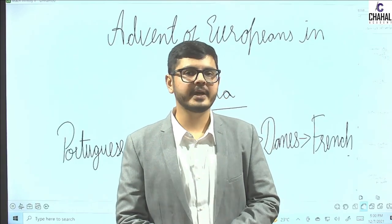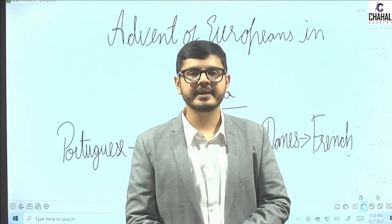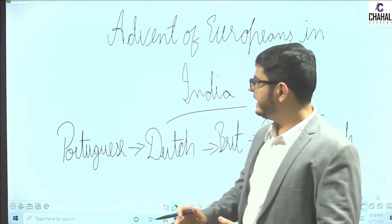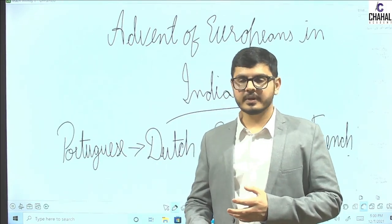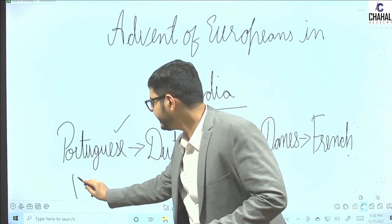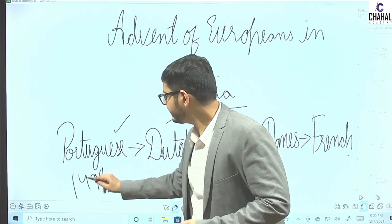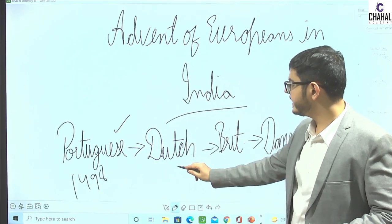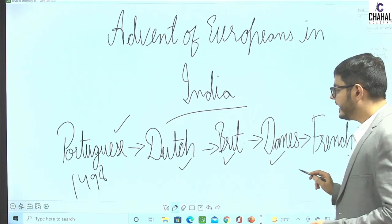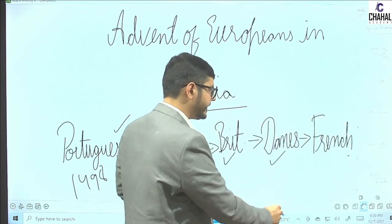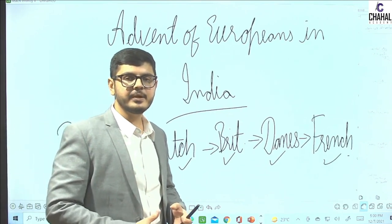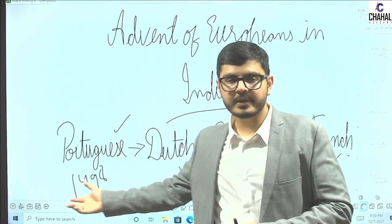In this video we will talk about the advent of Europeans in India. The Portuguese came first in 1498, after which came Vasco da Gama. After that we get to see the Dutch, then the British, then the Danes, and ultimately the French in India. These are the five powers which came to India, and this is the sequence.